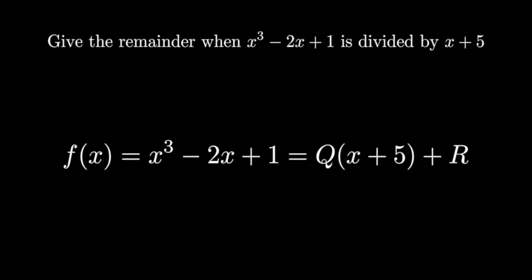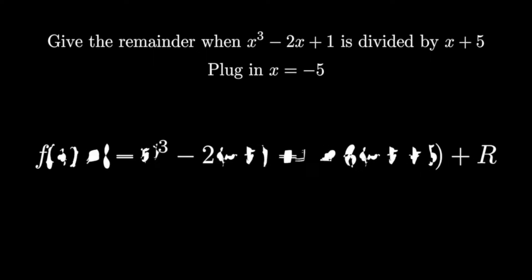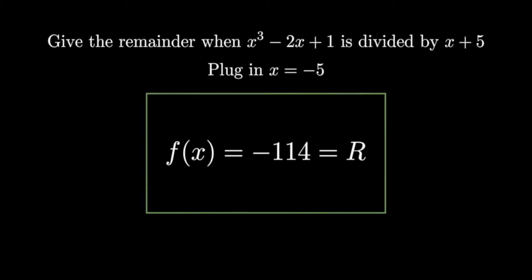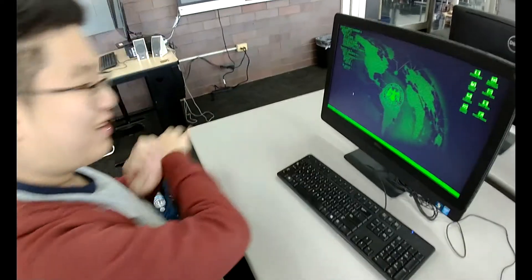The useful thing about this is that we can plug in x equals negative 5 to get q times 0 plus r, which just leaves us with the remainder, which is what we want. Plugging in negative 5 into our original equation, we get that the remainder equals negative 114. Got it.